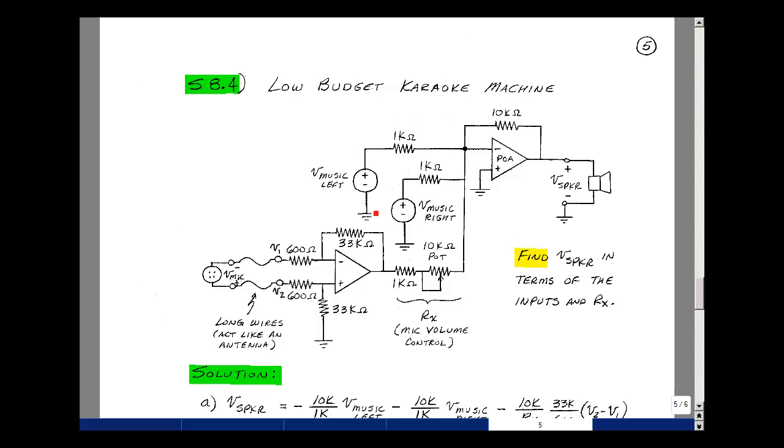Shown here is a circuit that looks very much like we had in supplemental problem 8.1 where we're summing three inputs: music from the left channel, music from the right channel, and then sound from this other circuit that's hooked up here.